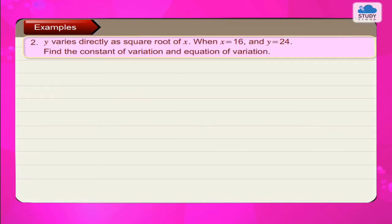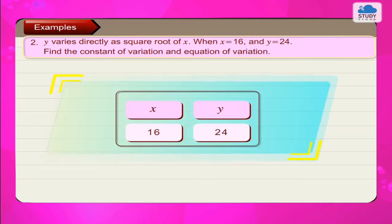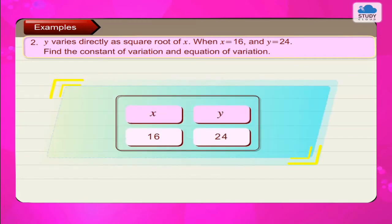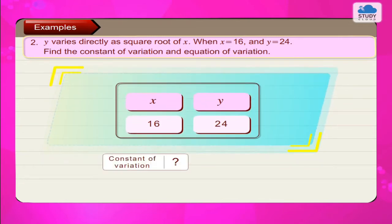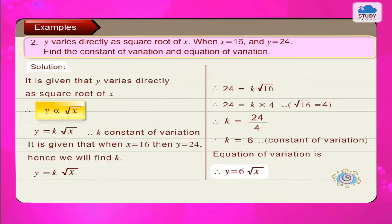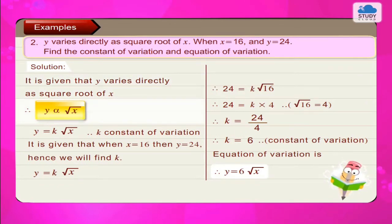Example 2. y varies directly as square root of x. When x = 16 and y = 24, find the constant of variation and equation of variation. Solution: It is given that y varies directly as square root of x. Therefore y is directly proportional to square root of x. Therefore y = k × √x, where k is the constant of variation.